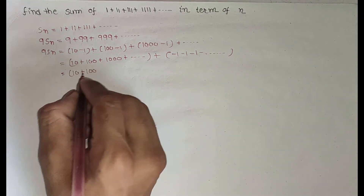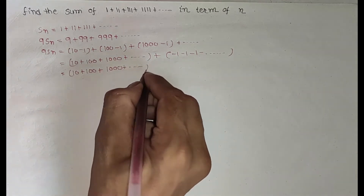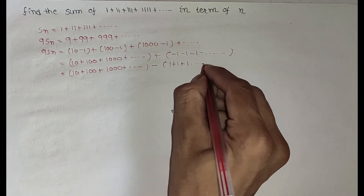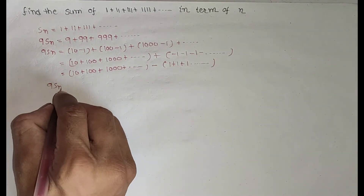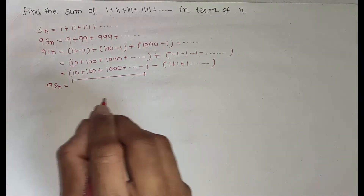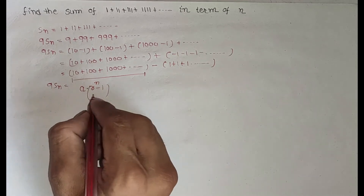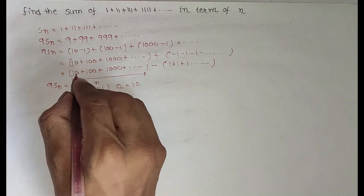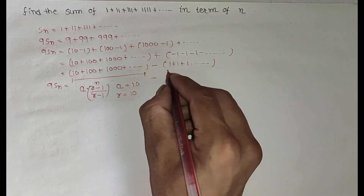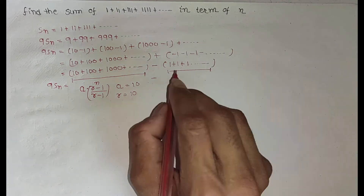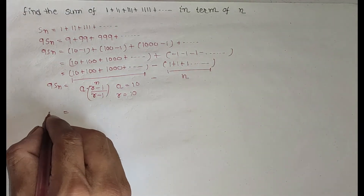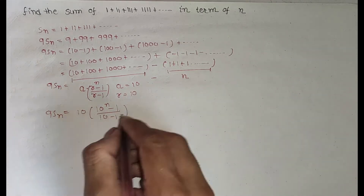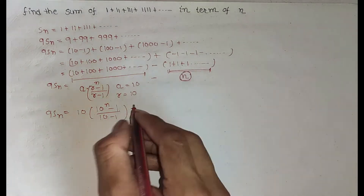So we have 10 plus 100 plus 1000 plus so on, minus taking minus common from the second series we get 1 plus 1 plus 1 plus so on. Now, 9 times Sn equals the sum of the geometric series given by a times (r^n minus 1) divided by (r minus 1), where a equals 10 and r equals 10. The sum of the minus series is n.